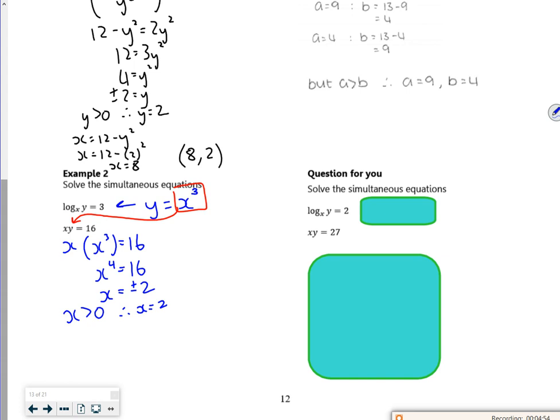And then what have we got? So xy is 16. So xy equals 16. So I've got 2 for x. Then y is 8. Fair.